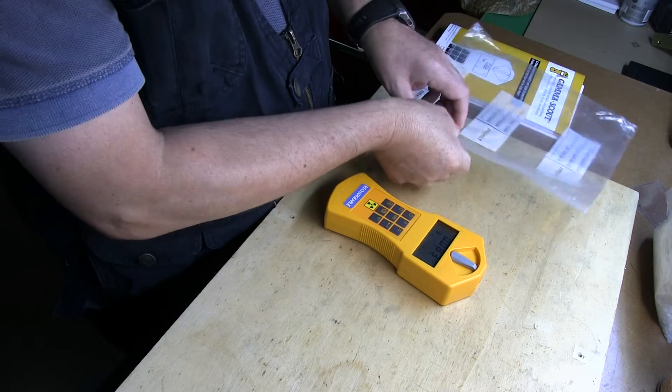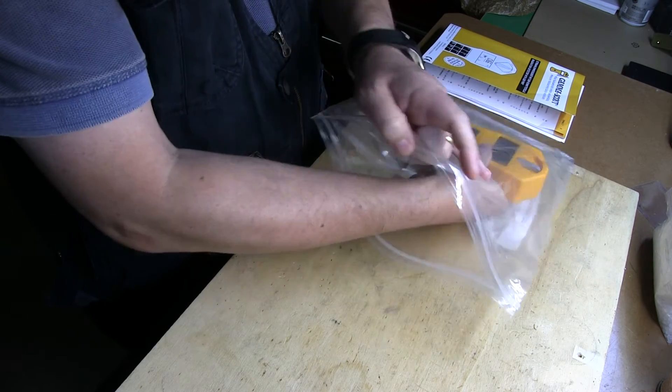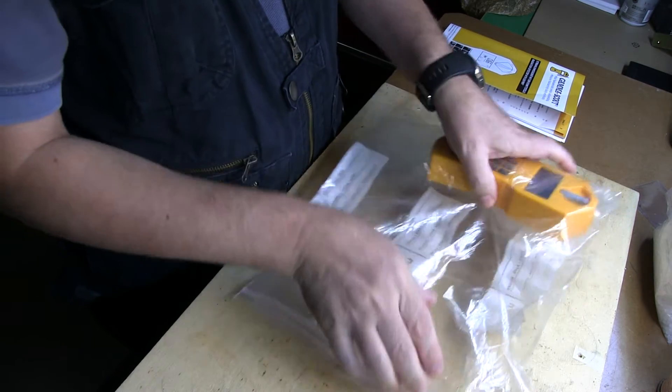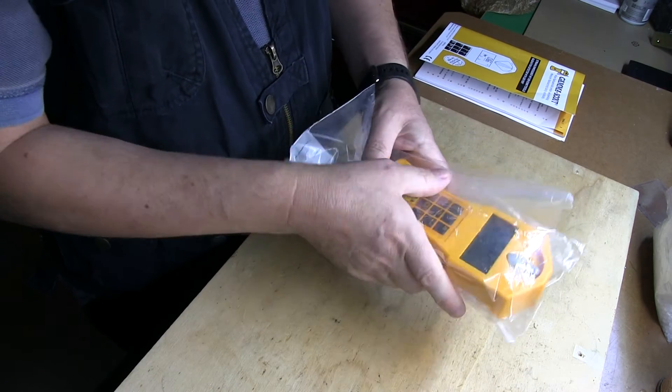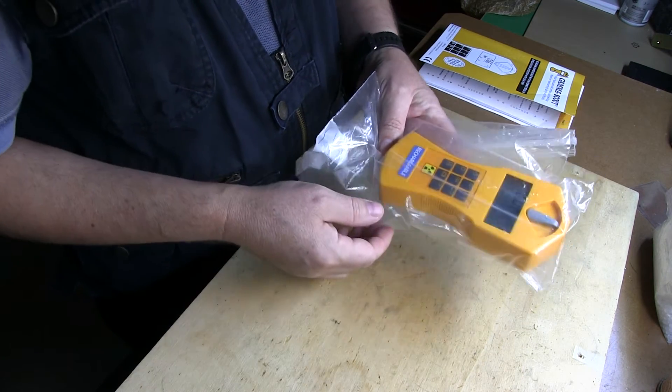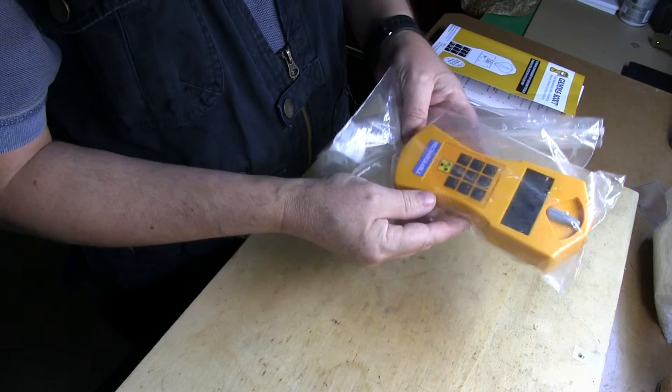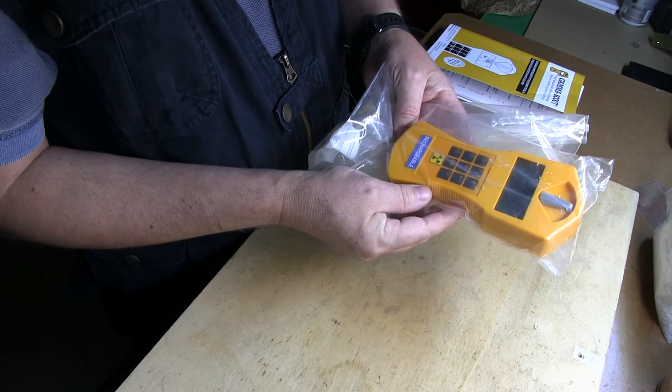So I always recommend when you want to use your gamma scout or your Geiger-Müller counter, just put it into a ziplock like so. You can still manipulate all the controls—that's very simple—but you prevent contamination of your Geiger-Müller counter. Thanks for watching!